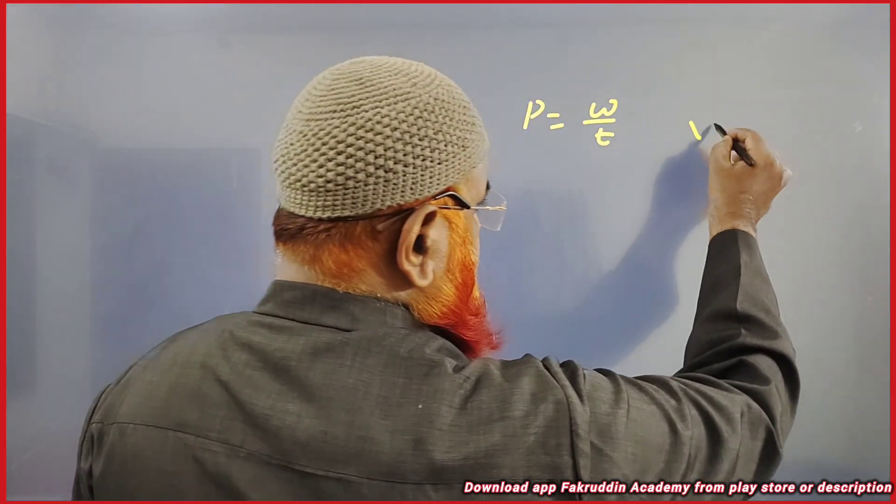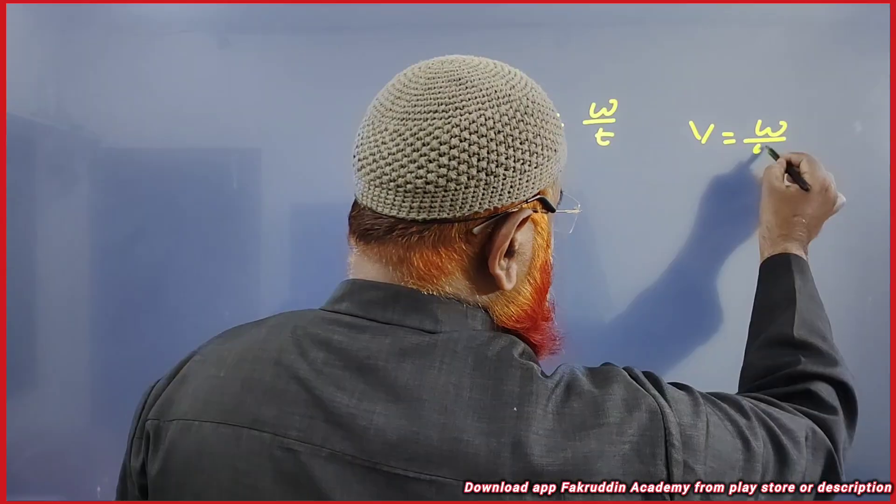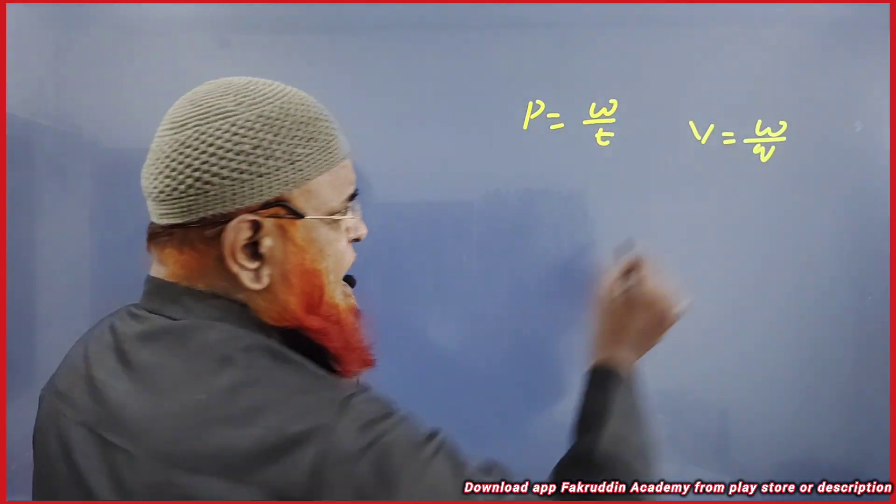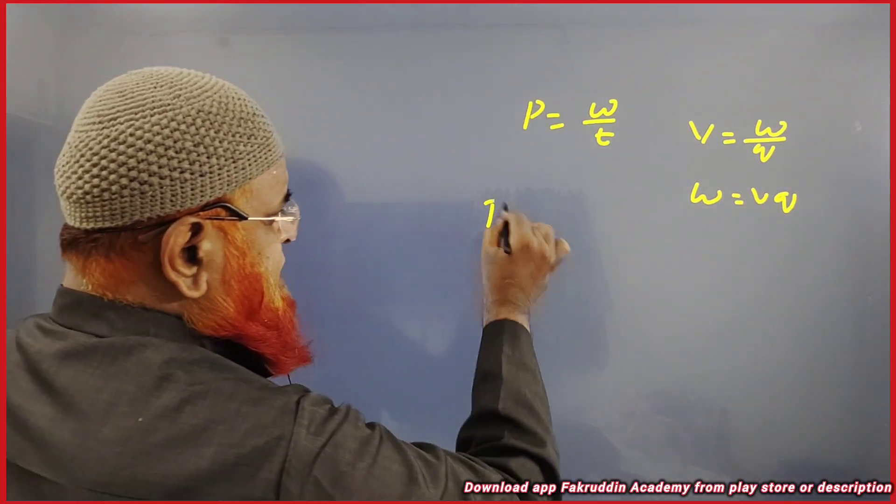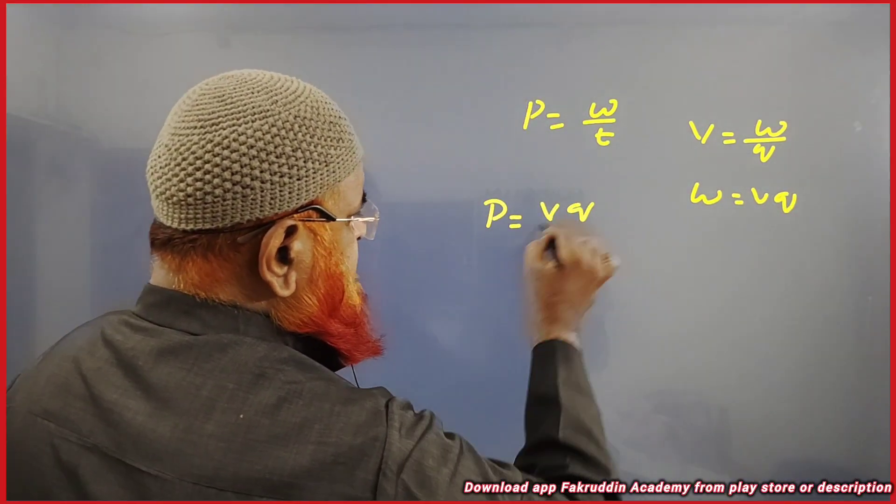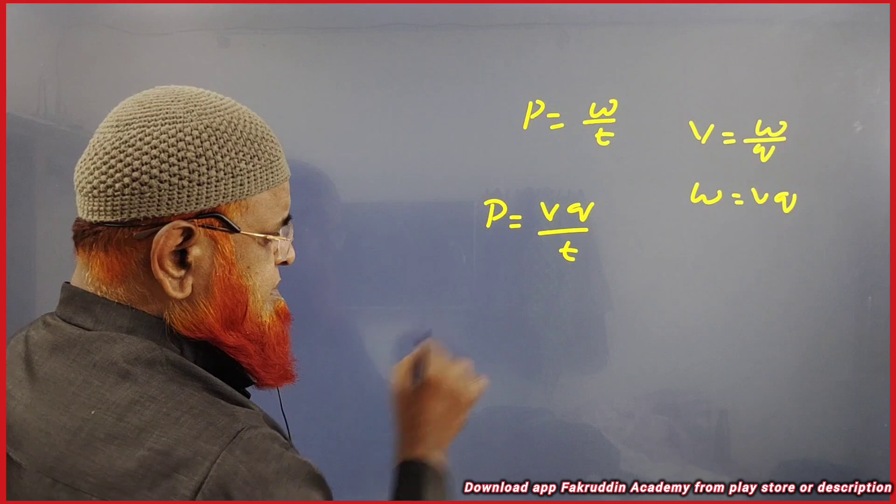And you also know electric potential is nothing but work done on unit charge. And you also know W will become cross multiplication if you do VQ. So power is equal to V into Q by T.